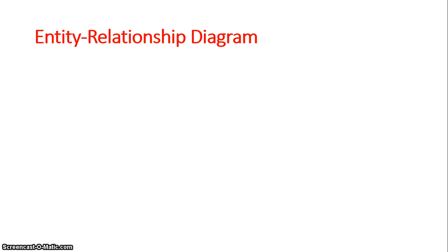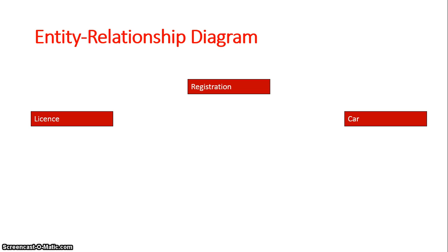If we're going to look at our Entity Relationship Diagram, we first establish our entities. In this example, we're looking at a license entity, a registration entity, and a car entity. These are our entities.